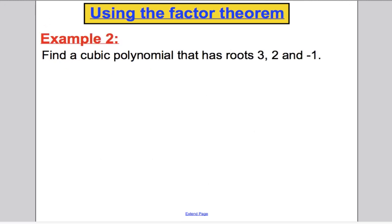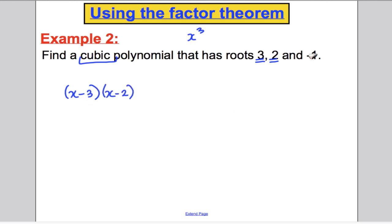Now I'll use the factor theorem to find a cubic polynomial — going backwards. I'm told the cubic polynomial has roots 3, 2, and negative 1, and I need to state what the polynomial is. By the factor theorem: if 3 is a root, x minus 3 is a factor; if 2 is a root, x minus 2 is a factor; if minus 1 is a root, x minus minus 1, i.e. x plus 1, is the third factor. Multiplying these three factors out gives me the polynomial. Multiplying the first two brackets: x squared minus 5x plus 6, with x plus 1 left over.